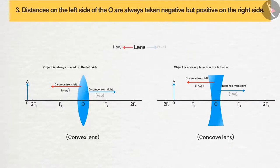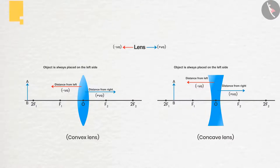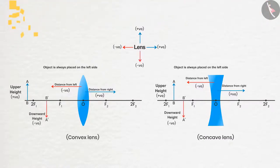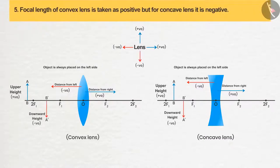Number four: all distances above the principal axis are taken as positive, and all distances below the principal axis are taken as negative. Number five: focal length of a convex lens is taken as positive, but for concave lens it is negative.